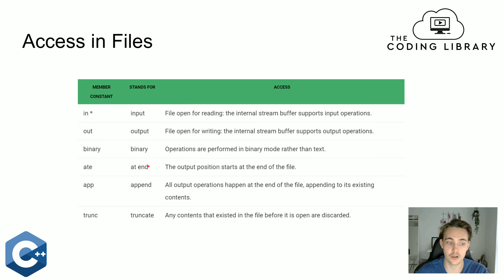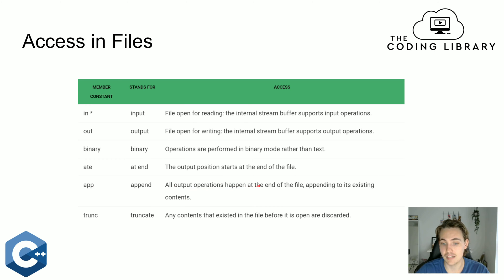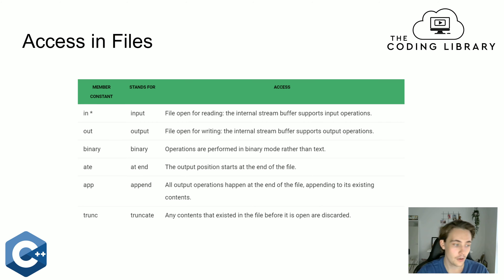We can also have other member constants like app or truncate. If we have already created a file and just want to append the output to the content already in the file, we can use the app member constant. It specifies that all output operations happen at the end of the file, appending to its existing content. So if we don't want to erase or delete the things already contained in that file, we can just use app to append what we want.